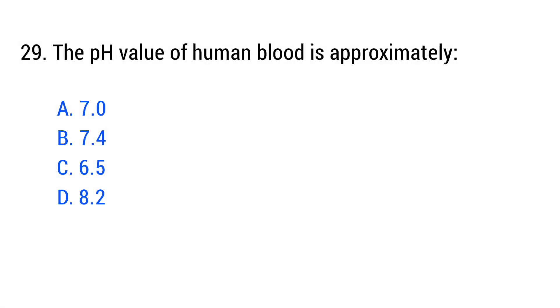Question number 29. The pH value of human blood is approximately? The right answer is option B: 7.4.